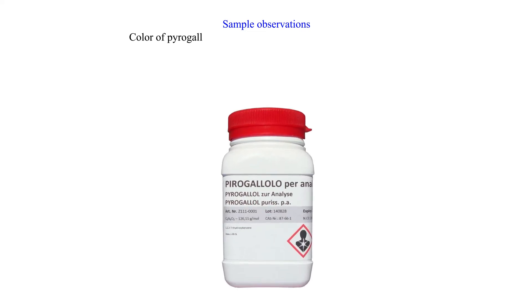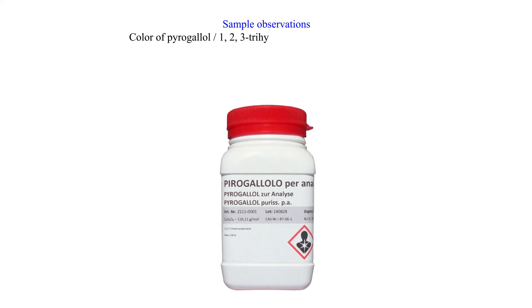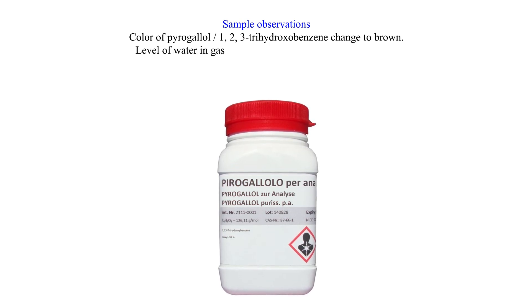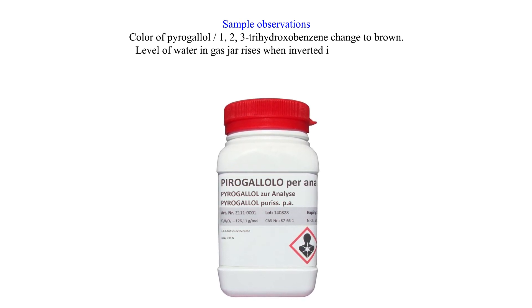Sample observations: The color of pyrogallol (1,2,3-trihydroxybenzene) changes to brown. The level of water in the gas jar rises when it is inverted in the basin or trough.